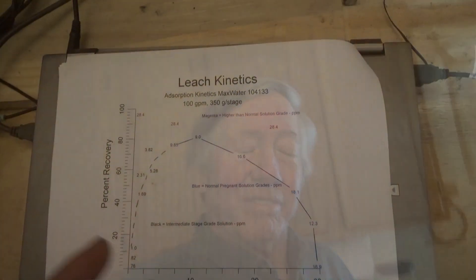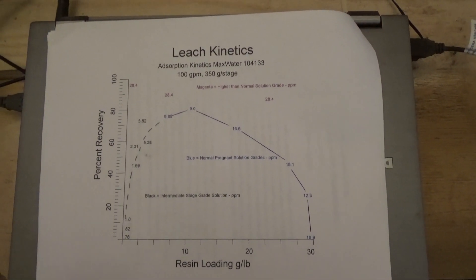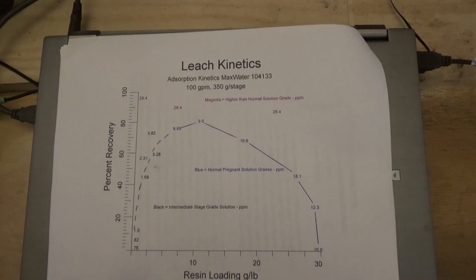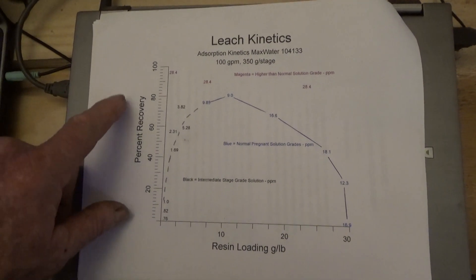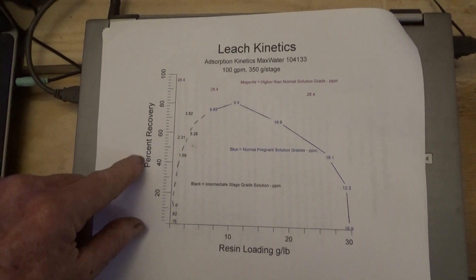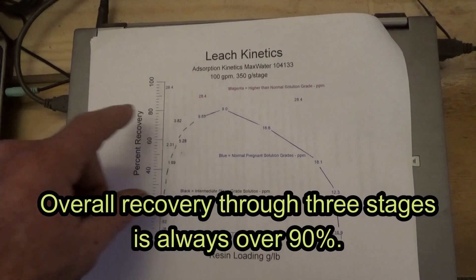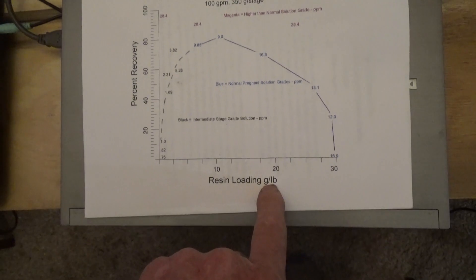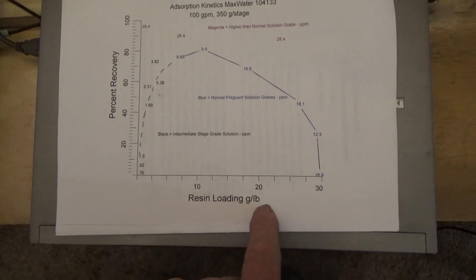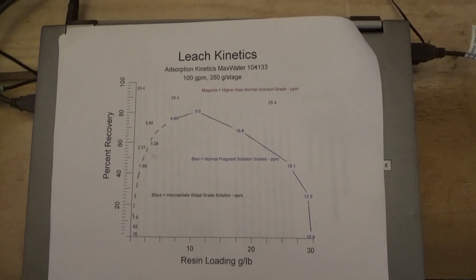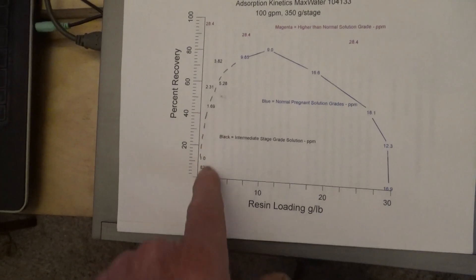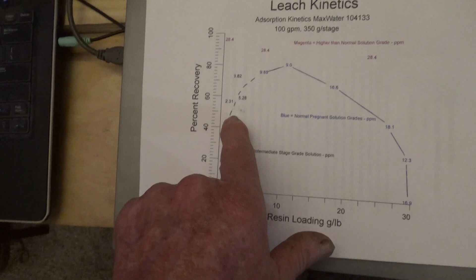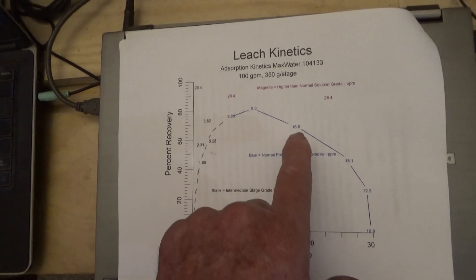This graph is a little confusing because I'm trying to graph three parameters in two dimensions. I have the percent recovery — this is how much of the gold flowing through the resin is captured at that particular stage — and the resin loading in grams per pound, that is grams of gold per pound of resin. As it fills up, the recovery gets worse.